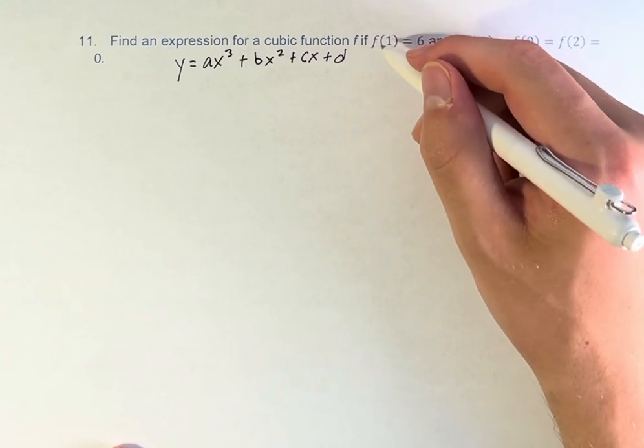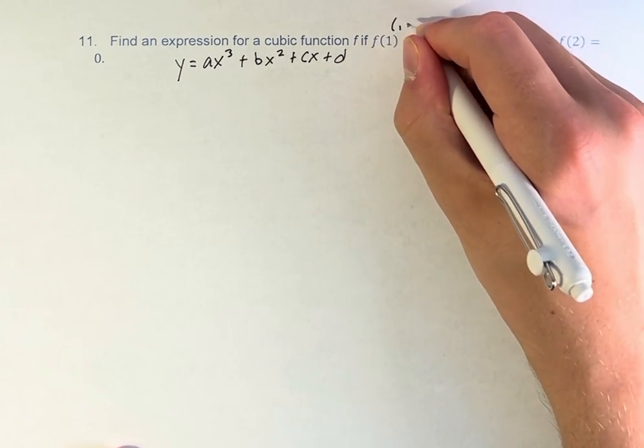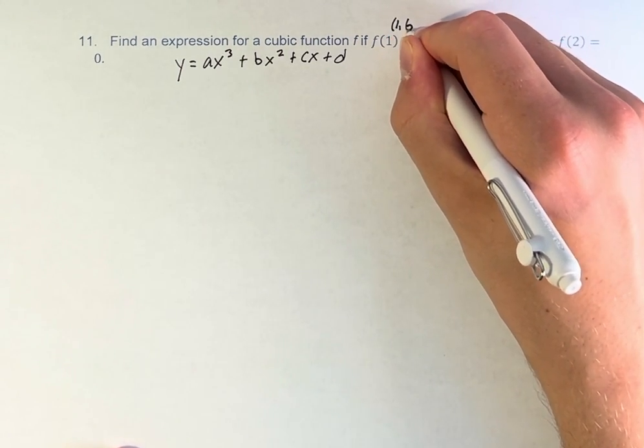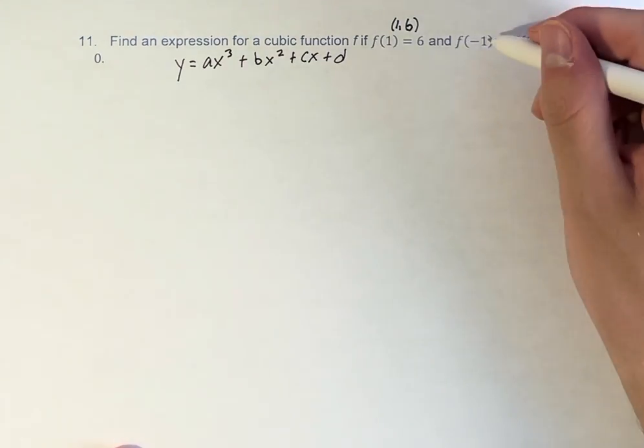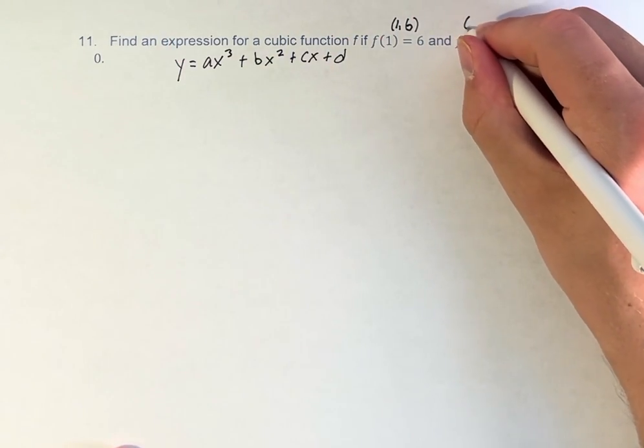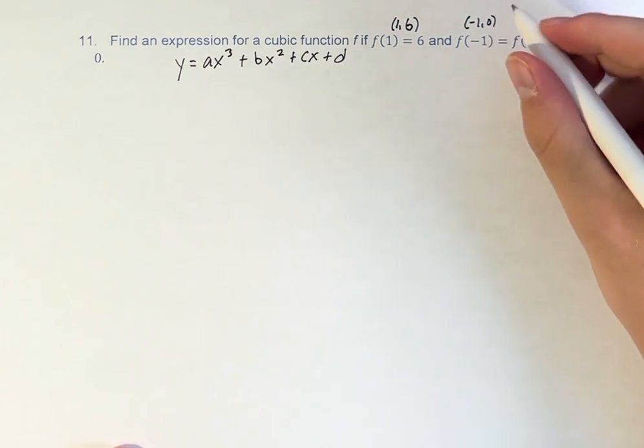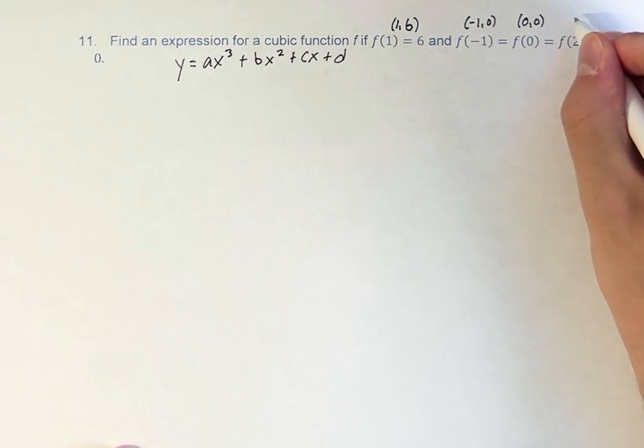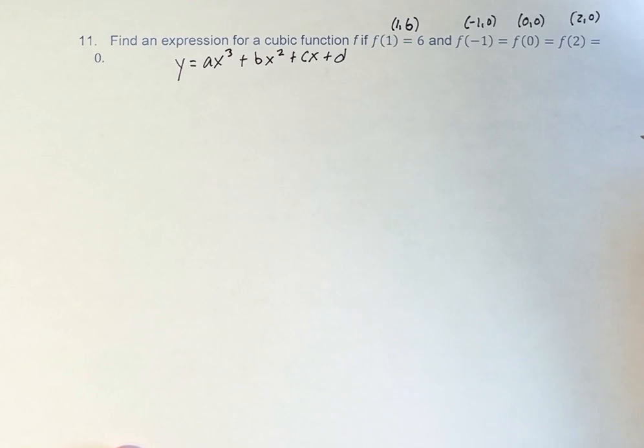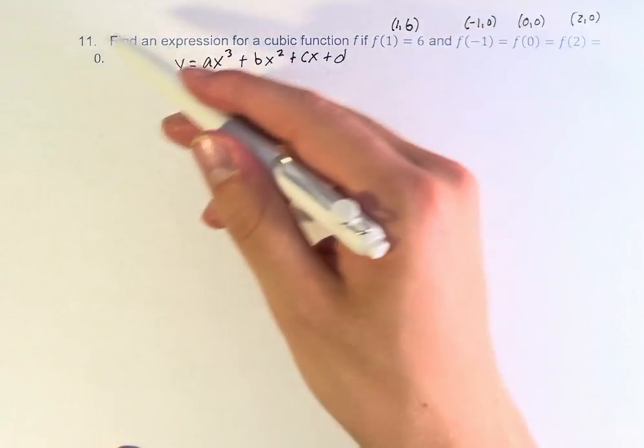So first, if f of 1 is equal to 6, that means the point 1, 6 is on the graph. If f of negative 1 is equal to 0, that means the point negative 1, 0 is on the graph, same with 0, 0, and 2, 0. The value that f is taking on is the x value, and the value it equals is the y value.